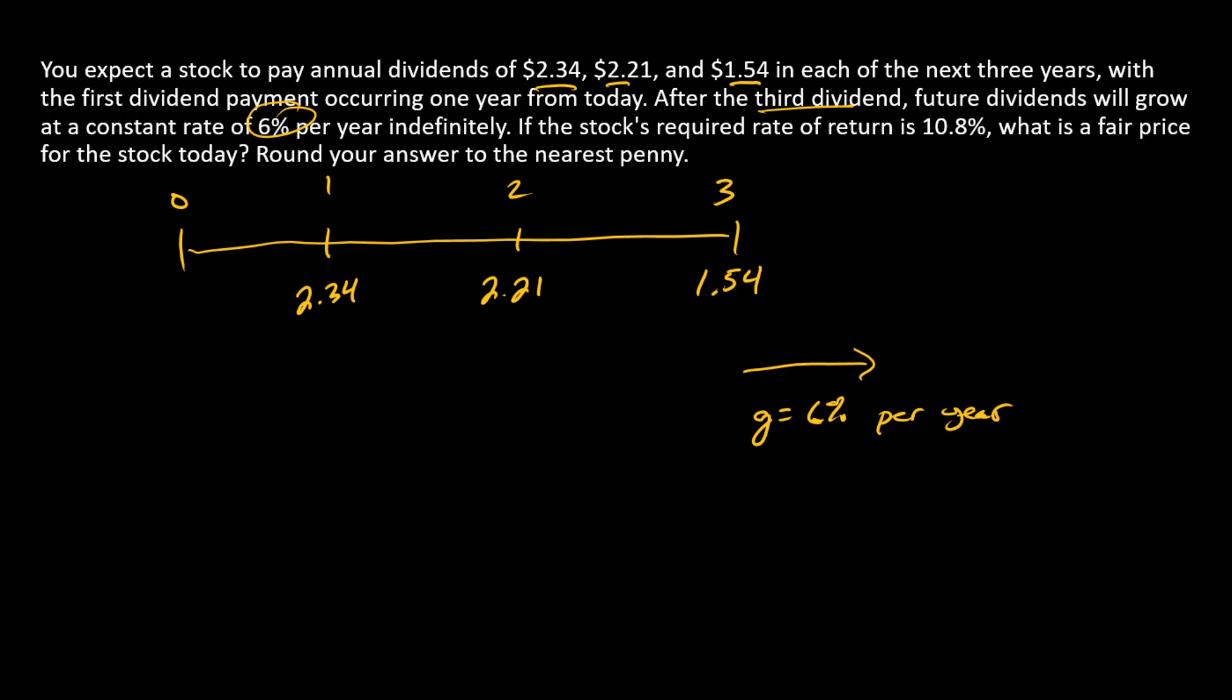What do we need to do? We've already got the first three dividends, and we know those are going to go into our evaluation framework. We can find some terminal price, a price at time 3 that we could stick in the timeline, and we would be essentially done. Fortunately, we can do that because we know there's going to be constant growth from time 3 forward.